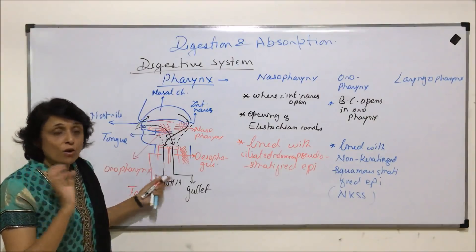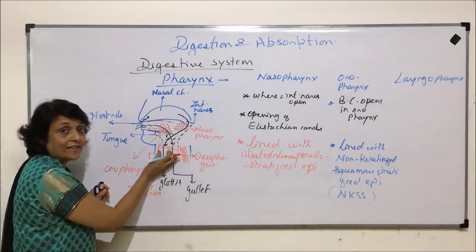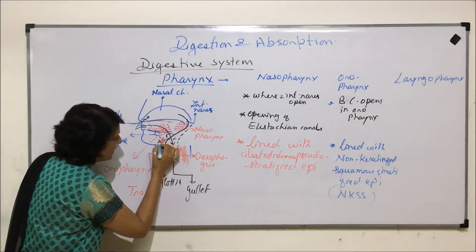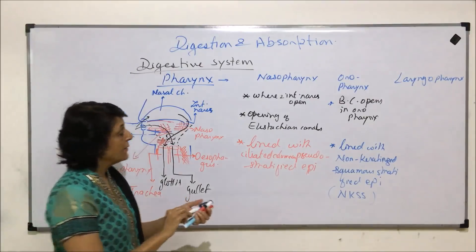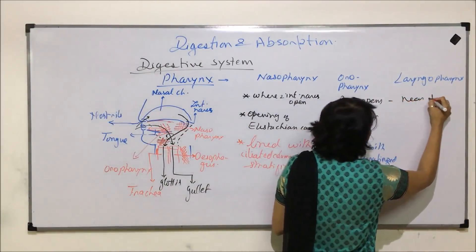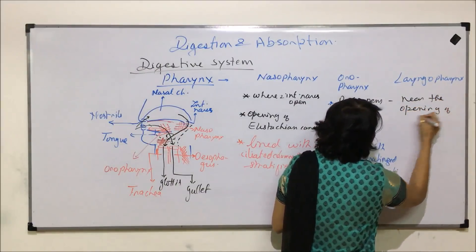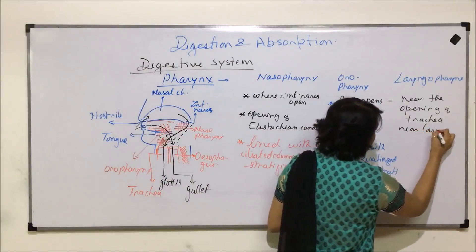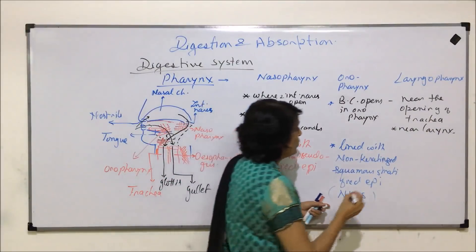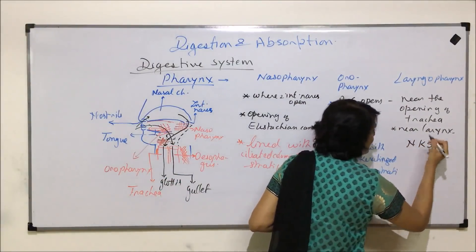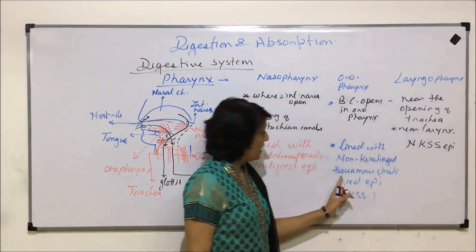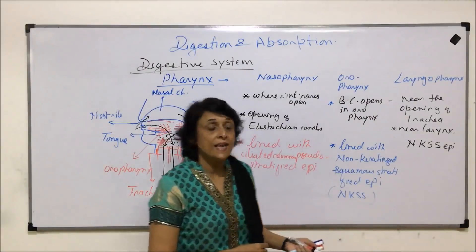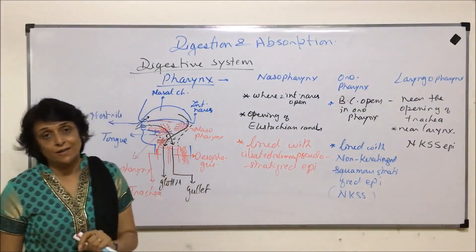The laryngopharynx is the area near the tracheal opening, that is, near the glottis, where the larynx is located. This lower part is known as the laryngopharynx, near the glottis. It is also lined with non-keratinized stratified squamous epithelium — the same as the oropharynx. So only the nasopharynx has ciliated epithelium, whereas the oropharynx and laryngopharynx both have non-keratinized squamous stratified epithelium.